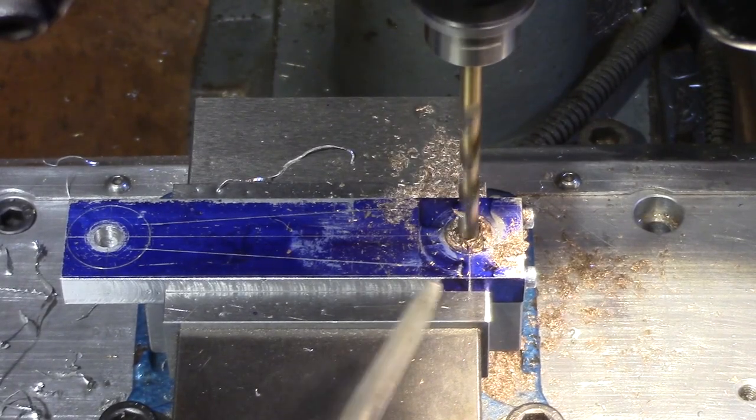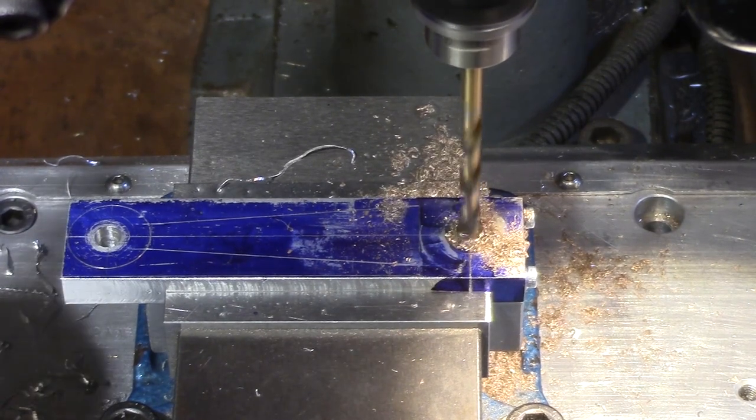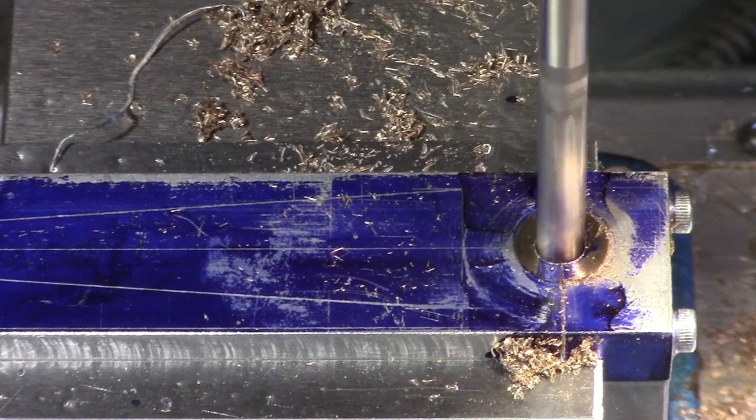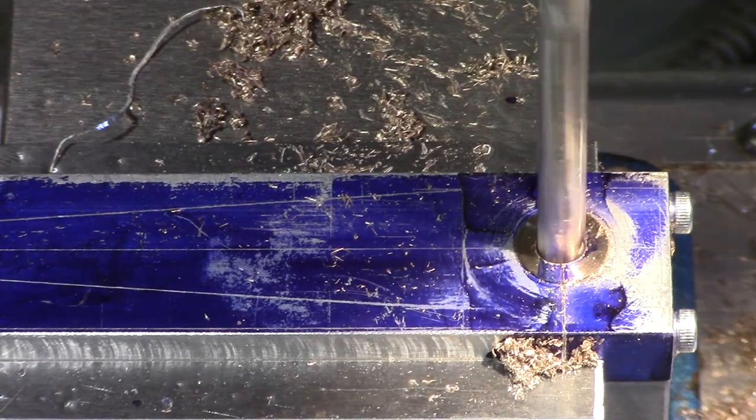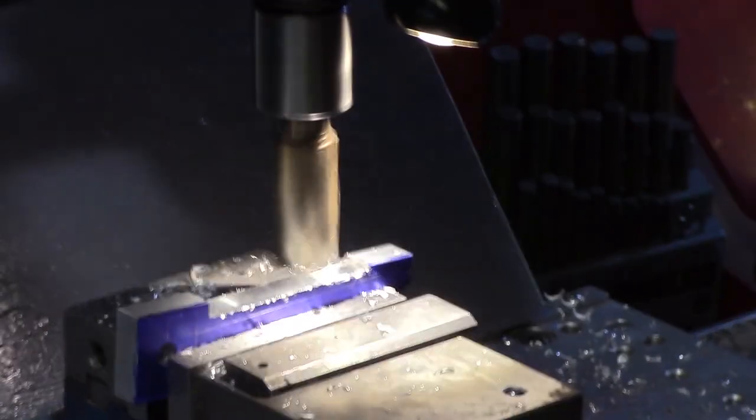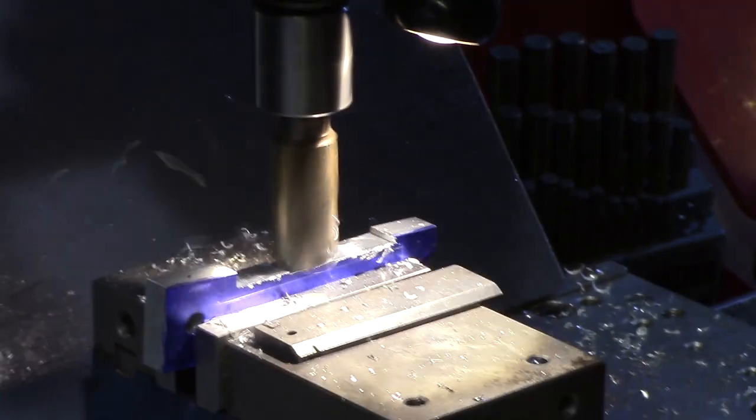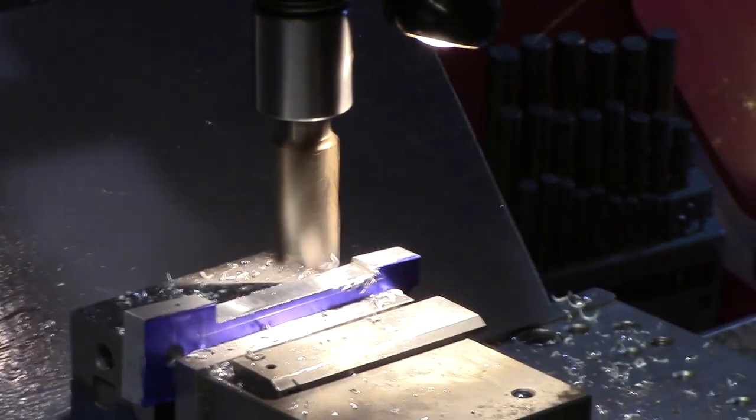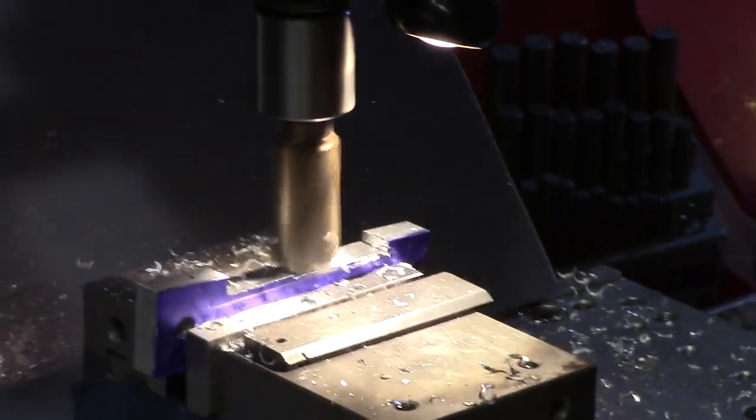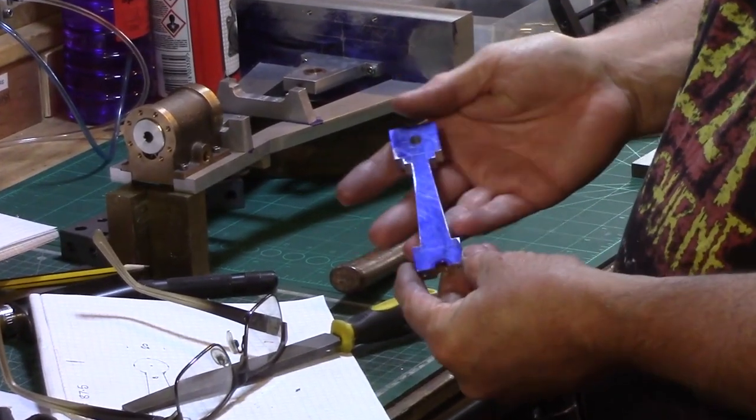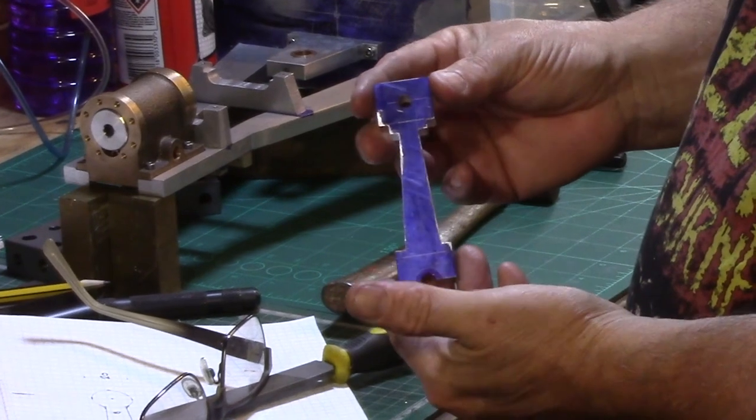Once the locking compound had set overnight, the bearing was then drilled and reamed out to 6mm. I could now begin the shaping of the conrod, which was roughed out on the mill before finishing to dimension. Here you can see the basic shape of the conrod making progress.